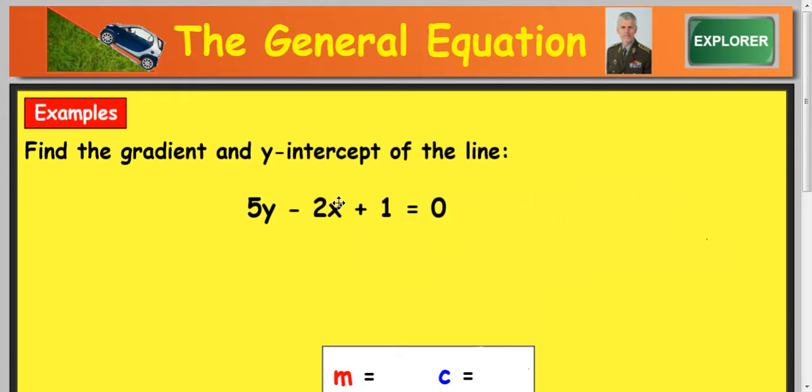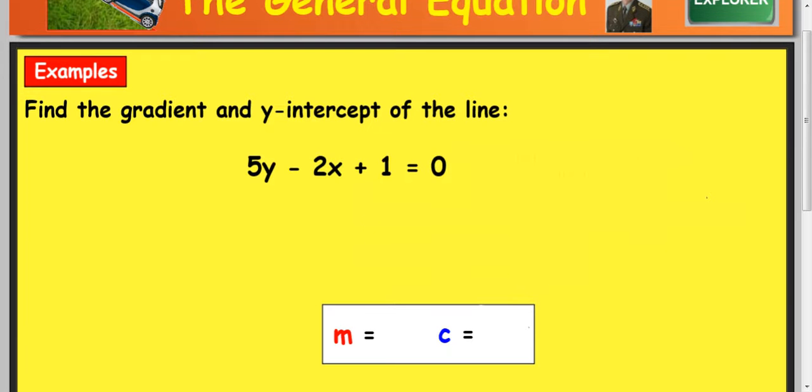Right, find the gradient and y-intercept of this line. Now, what you're trying to do is you're trying to rearrange it to get it to y equals and then pick out the gradient and the intercept. So the first step in my mind is to get 5y equals.